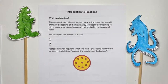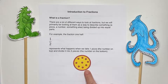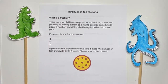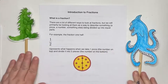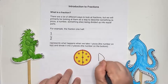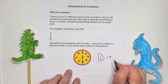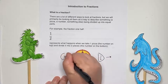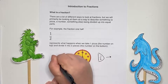There are a lot of different ways to look at fractions, but we will primarily be looking at them as a way to describe something — a pizza, a number, something else — being divided up into equal parts. We're going to start off with one-half. One-half is frequently the first fraction you learn about, and it represents what happens when we take a pizza and divide it into two pieces, so Godzilla and Sharktopus each get one half.